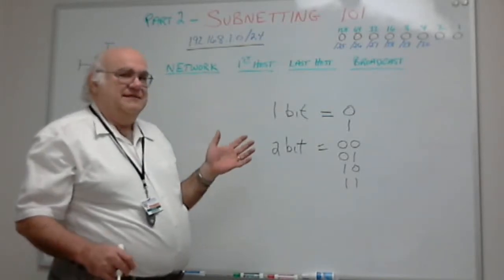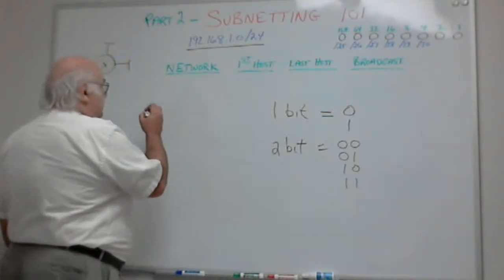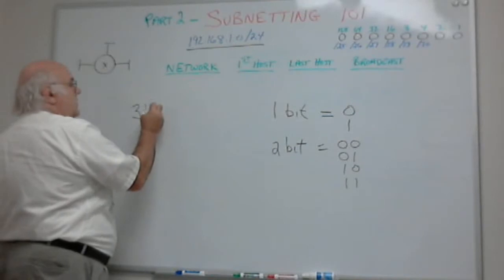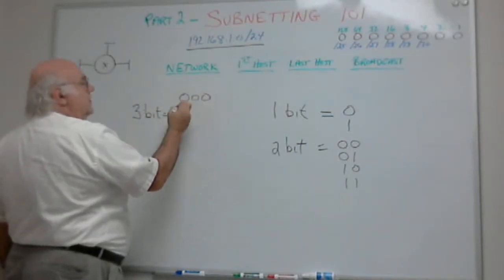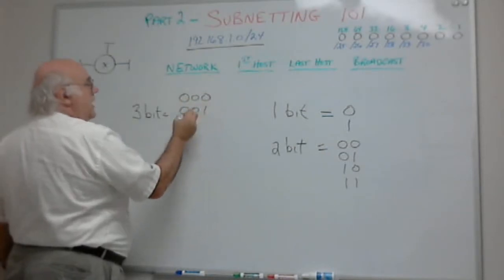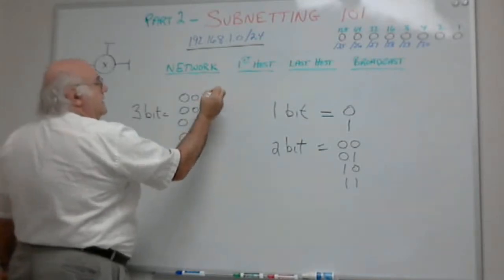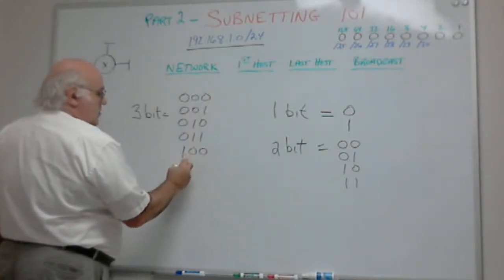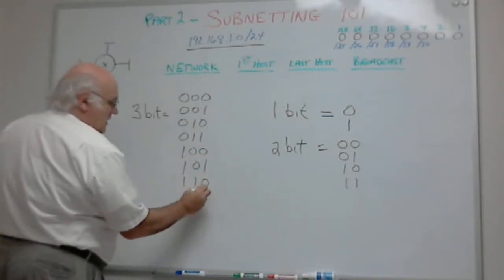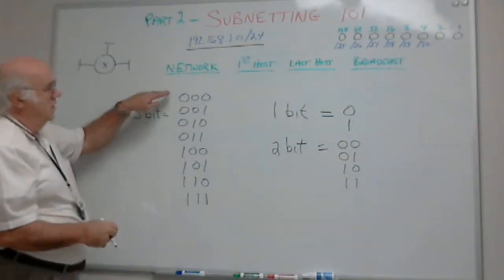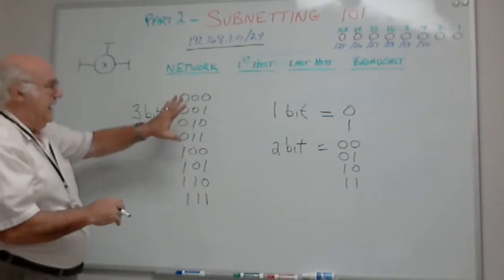But what if I needed more — say, six networks? Two bits won't cut it, so let's try three bits. With three bits I can have 000, 001, 010, 011, 100, 101, 110, and 111 — that's eight different numbers, eight different networks.